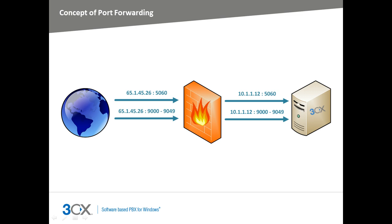In this example, the firewall is sitting between the internet and the PBX. It has been configured to forward connections received on specific ports on its public interface to the machine running 3CX phone system. Note that when this happens, the port is not changing.